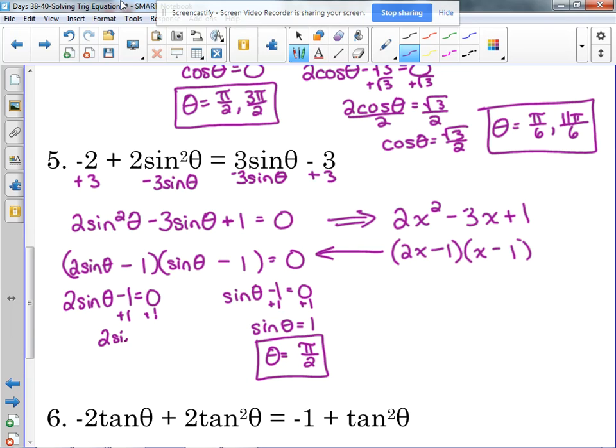Add one to both sides. Two sine of theta is equal to one. Divide by two. Sine of theta is equal to one half. That's at pi over six and five pi over six. So this one has three solutions. We've had two solutions, we've had four solutions, we've had three solutions. We can have any number of solutions. There's no true way to be able to tell at the very beginning of the problem.